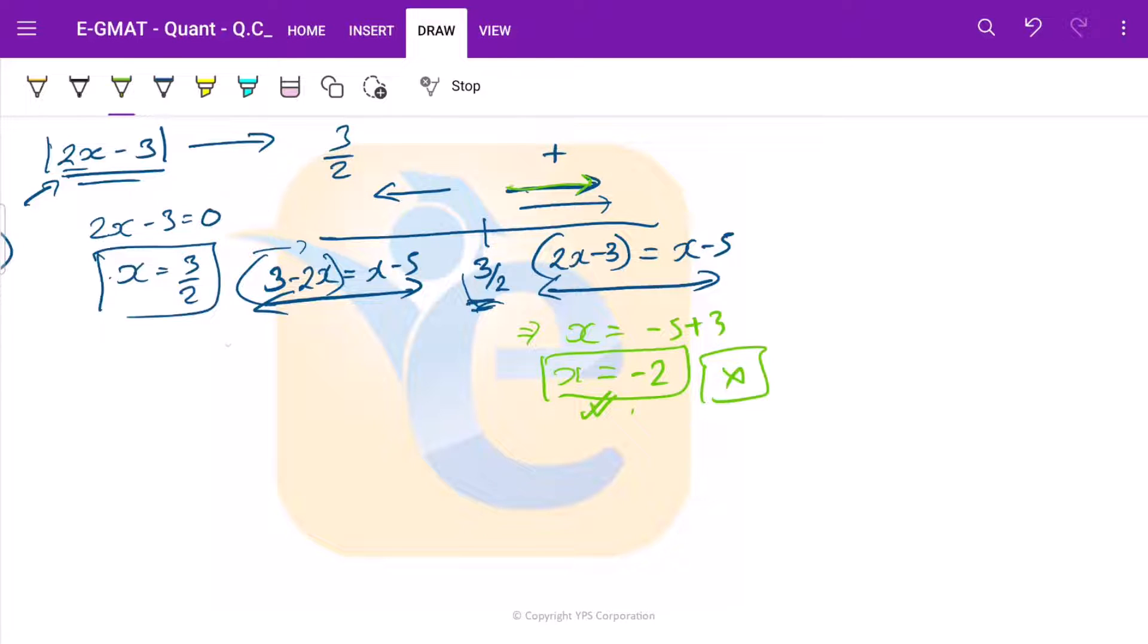Now let us solve this side of the equation. This is -2x - x = -5 - 3. So this becomes -3x = -8.